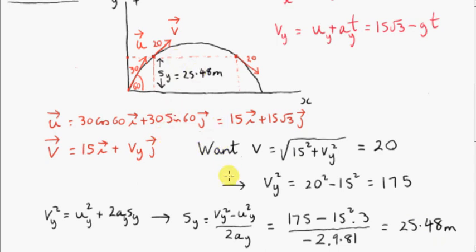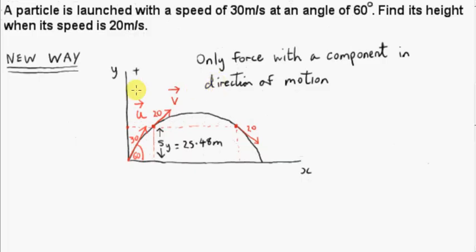Now let's do it using conservation of energy. Before doing this the new way, let's reiterate the condition for using conservation of energy. We can use conservation of energy only when the only force with a component in the direction of motion is gravity. And that's the situation here — the only force with a component in the direction of motion of the particle is gravity.